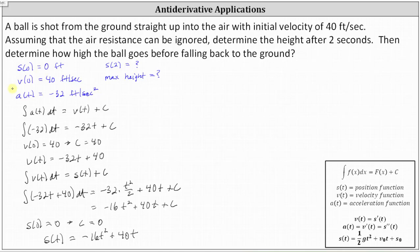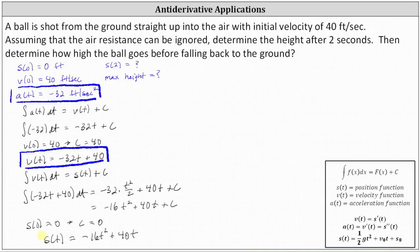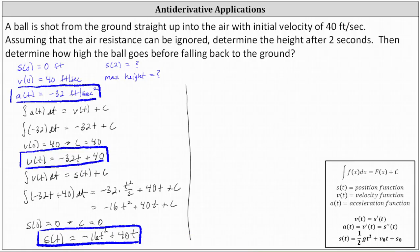To review: we started with the acceleration function, which is only due to gravity, used this to recover the velocity function, and used that to recover the position or height function. Now let's answer the questions. We can determine the height after two seconds, which is s of two, which equals negative 16 times two squared plus 40 times two, which equals 16 feet. The height after two seconds is 16 feet.